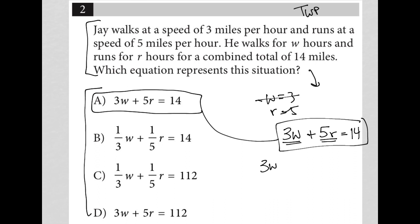The reason that 3W would represent distance is because three is miles per hour, three miles per hour, and W is hours, W hours, which means that the hours here would cross out, leaving you with just 3W for miles. That would be the only unit left.